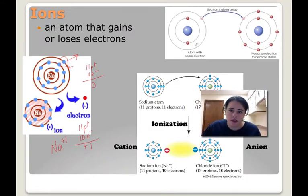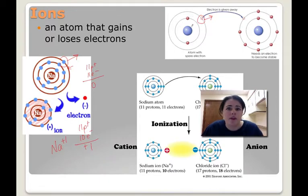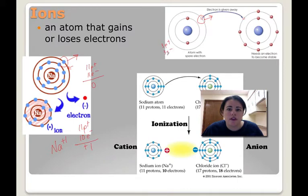Over here we have lithium. Lithium has a valence shell with only 1 electron when there could be 7 more. It's easier to give up 1 than to find 7 more electrons. So it kicks out that electron and drops down a shell to be stable — the first shell is stable at 2. So it will now have 3 protons and 2 electrons, which gives it a positive 1 charge.